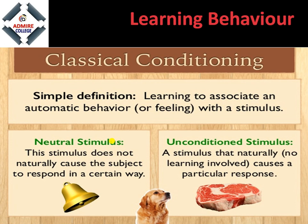Next type of learning behavior is classical conditioning. Its simple definition is: learning to associate an automatic behavior or feeling with a stimulus. Pavlov conducted an experiment on a dog — he paired a neutral stimulus with a conditioned stimulus. When he gave food to the dog, he rang a bell at the same time. The dog learned that whenever it received food, a bell sound would occur. So even if food was not given but the bell was rung, salivation would start in its mouth. This is classical conditioning.